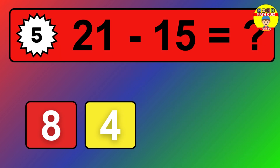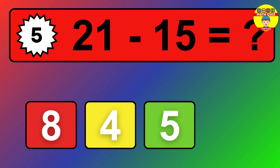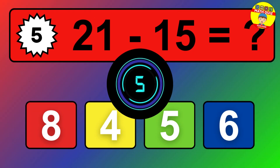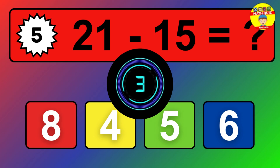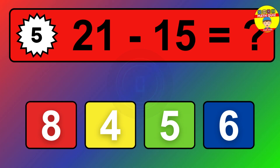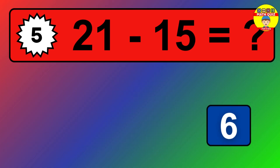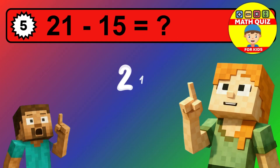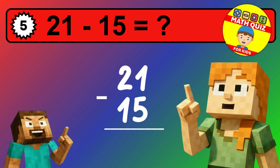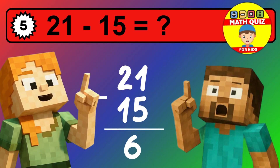Let's solve this step by step. We start with the units. 0 minus 6 is not possible, so we need to regroup. We take one 10 from the tens column. Now we have two tens, and the units become 10. Now we subtract. 10 minus 6 is 4. Then we go to the tens. 2 minus 2 is 0. The final answer is 4.